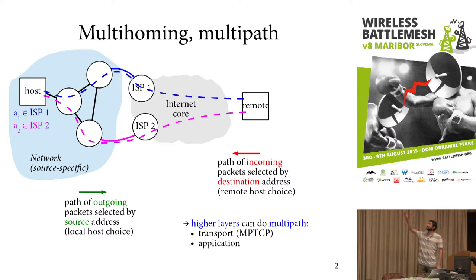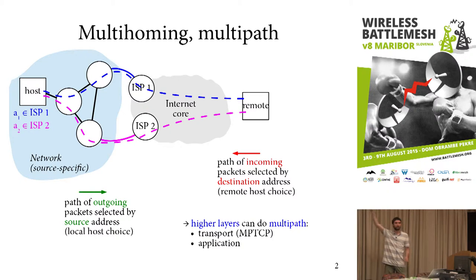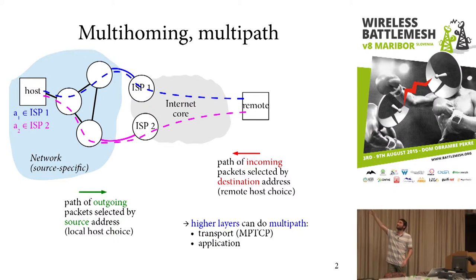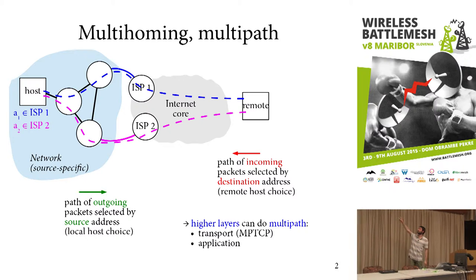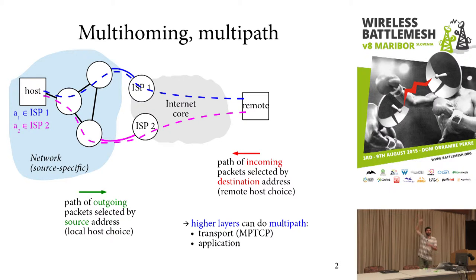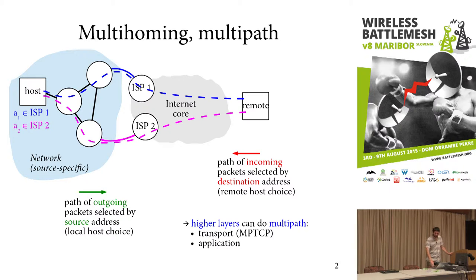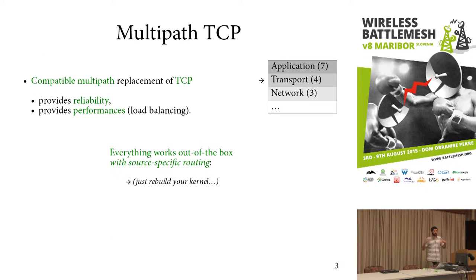In a multi-home network, the host which has multiple IP addresses can select the outgoing path of its packet by selecting its source address, and conversely, the remote peer can select the incoming path of the packet by selecting the destination address of the host. This allows for new multi-path transport application protocols.